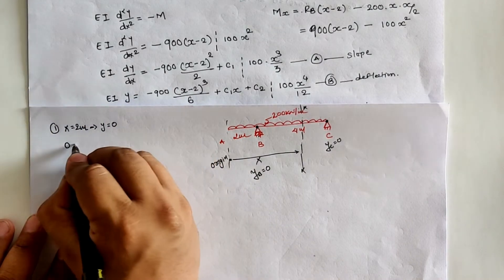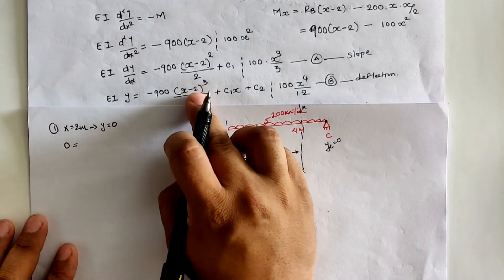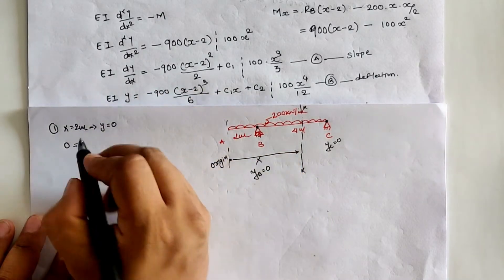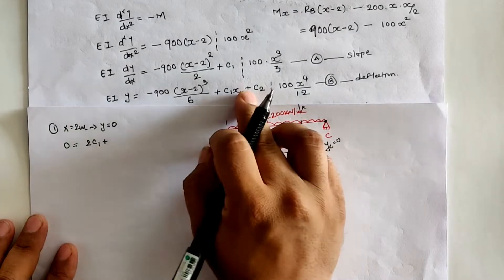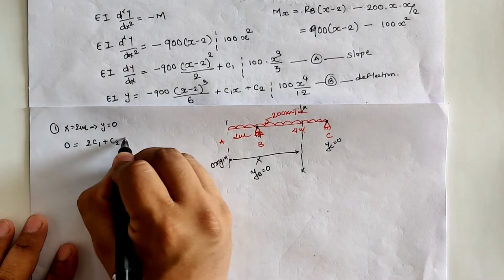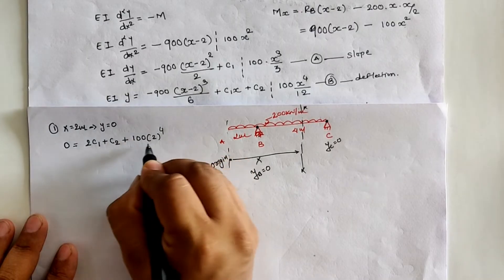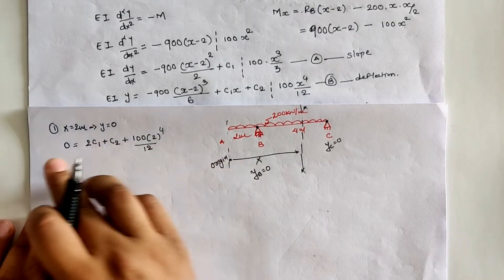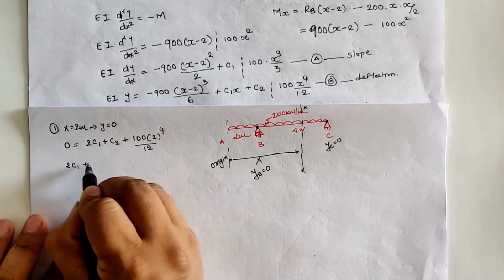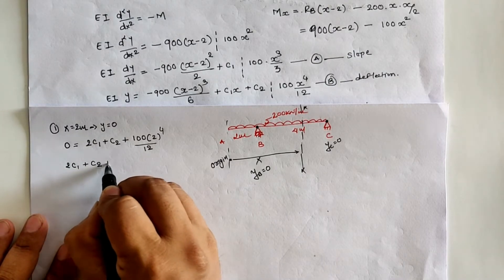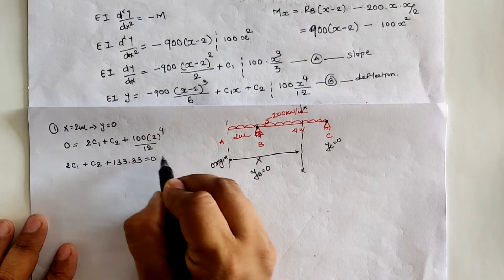Applying BC1 in equation B with x = 2 and y = 0: EI·(0) = 0 (since (2 − 2)³ = 0) + 2C₁ + C₂ + 100·(2⁴)/12. Solving: 2C₁ + C₂ + 133.33 = 0 ... (Equation 1).